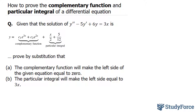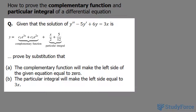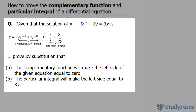In this lesson, I'll show you how to prove the complementary function and particular integral of a differential equation. The question reads: given the solution of y double prime minus 5y prime plus 6y equals 3x, where the equation has a complementary function and a particular integral, prove by substitution that (a) the complementary function will make the left side equal to 0, and (b) the particular integral will make the left side equal to 3x.